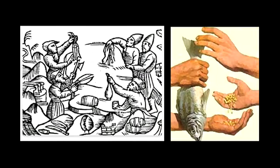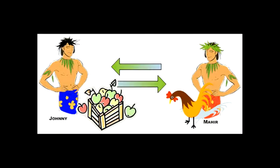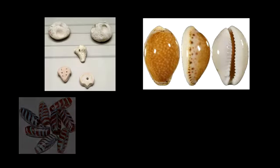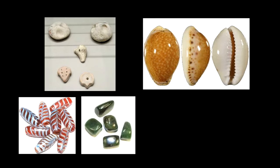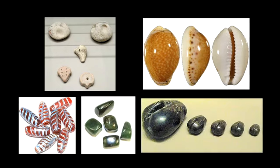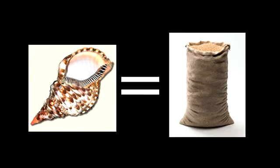Commerce grew. Some sort of standard measure was needed so that the value of their goods could be calculated and be exchanged for what others produced. So people chose a common unit and gave it a fixed value, and the values of goods were measured in multiples of that unit.